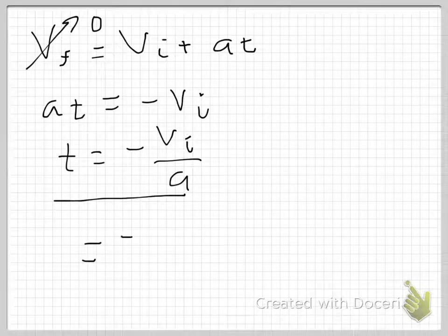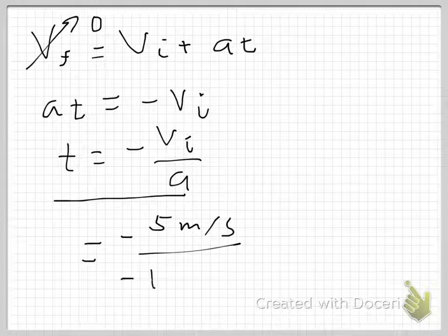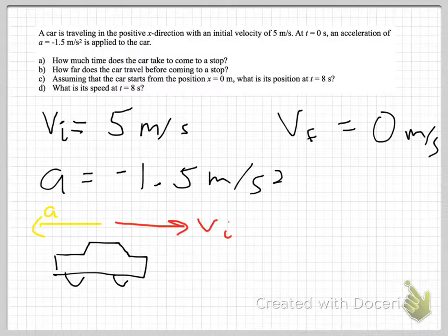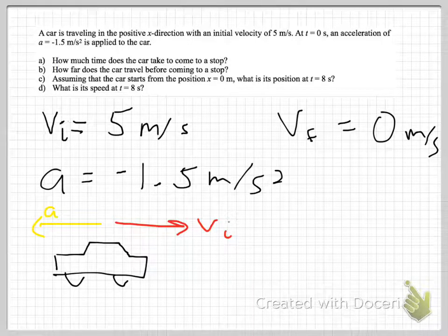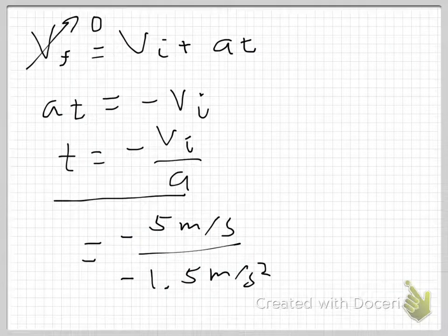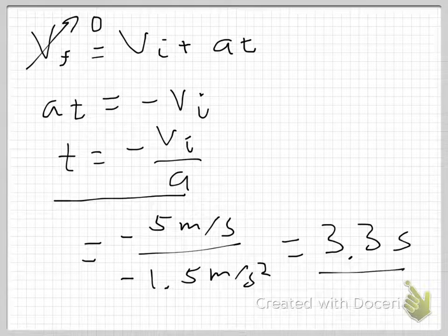T equals negative 5 meters per second divided by A, which is negative 1.5 meters per second squared. You have to keep track of the negatives, because there is a negative sign hidden inside A — A is defined as negative 1.5 meters per second squared. So the negative signs cancel, and running that through the calculator gives 3.3 seconds. That is the time.